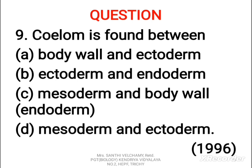Ninth question: coelom is found between A) body wall and ectoderm, B) ectoderm and endoderm, C) mesoderm and body wall, D) mesoderm and ectoderm. The correct answer is C — mesoderm and body wall.